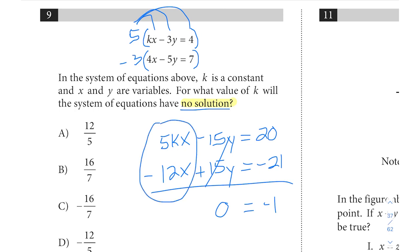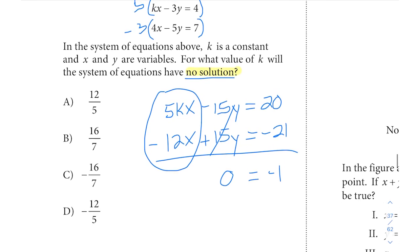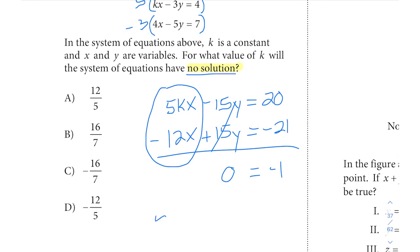Our variables, meaning our x's and our y's, have to cancel out. So these two x terms have to cancel out by adding together to zero. They have to sum to zero.